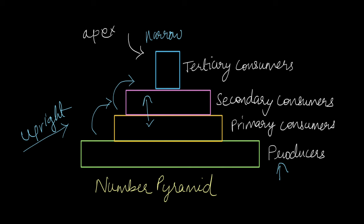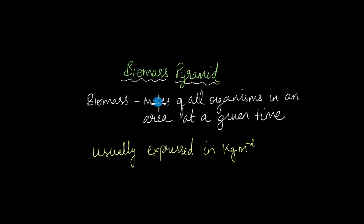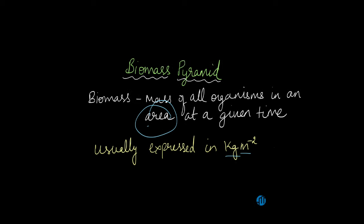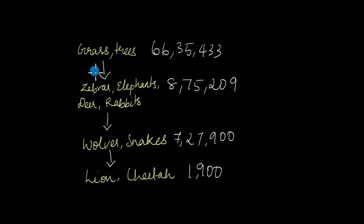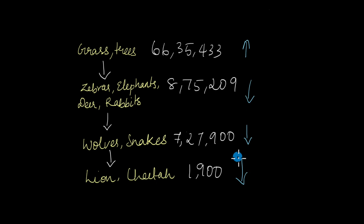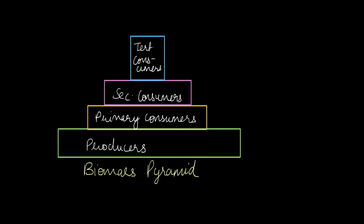Next we will talk about biomass pyramids. Biomass includes the mass of all organisms in an area at a given time. Because it is the mass of all organisms in an area, the SI unit of biomass is usually kg per meter square. Going back to our grassland ecosystem, if you were to calculate the biomass of individuals at each trophic level, you would naturally get a high number for grass and trees, and as you go up the trophic levels the number keeps decreasing, with the least for tertiary consumers like lion and cheetah. If you were to plot this as a bar graph stacked starting with producers at the base, you get a biomass pyramid.